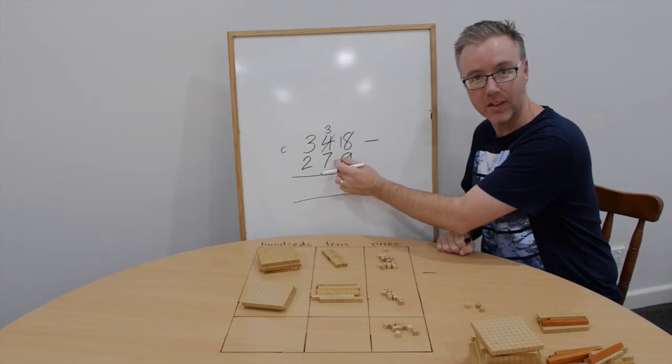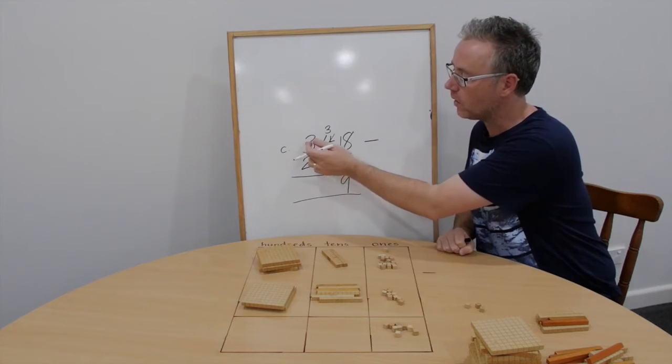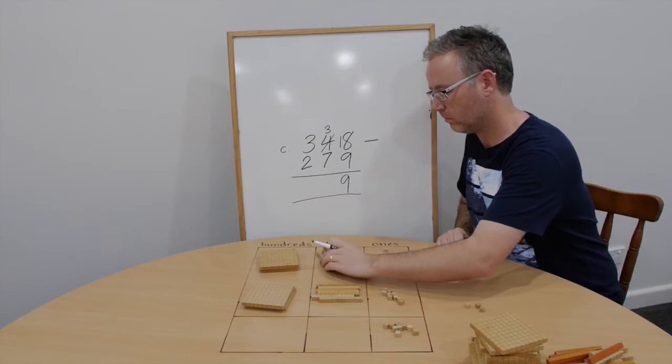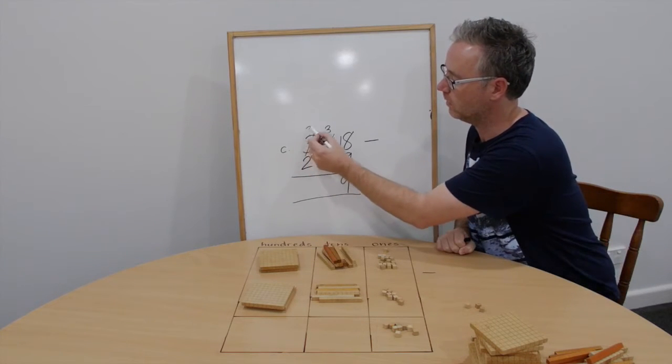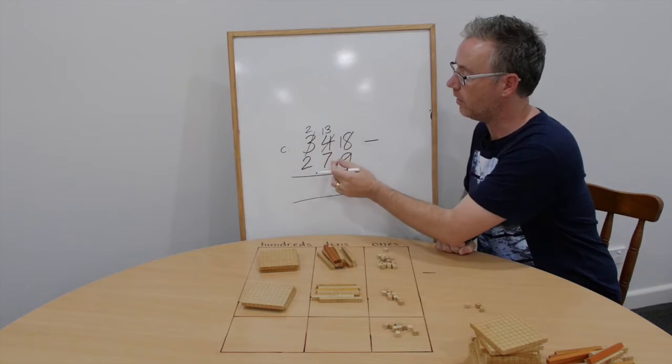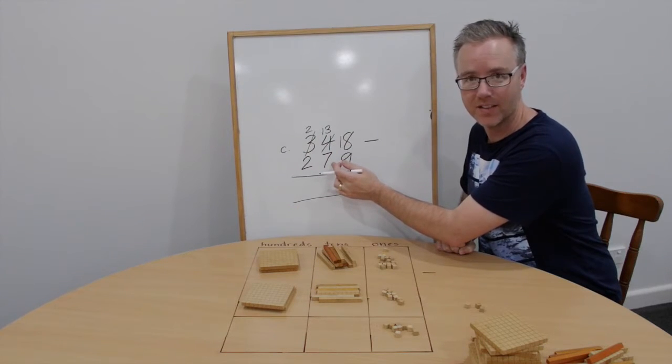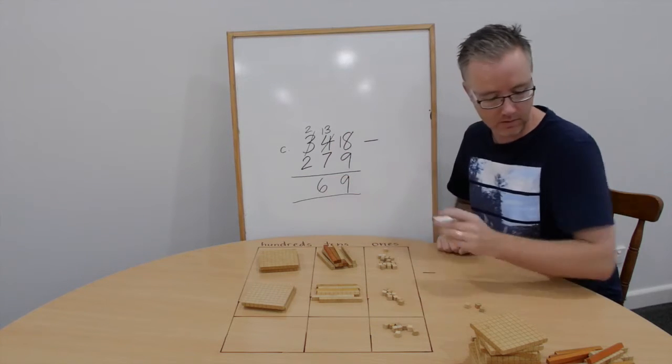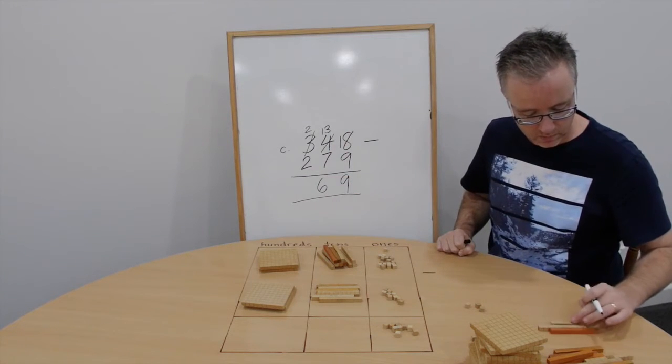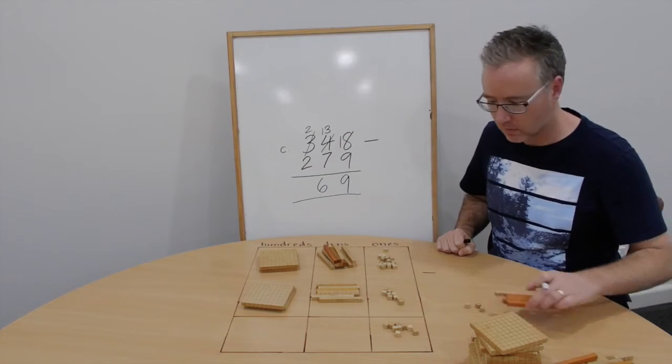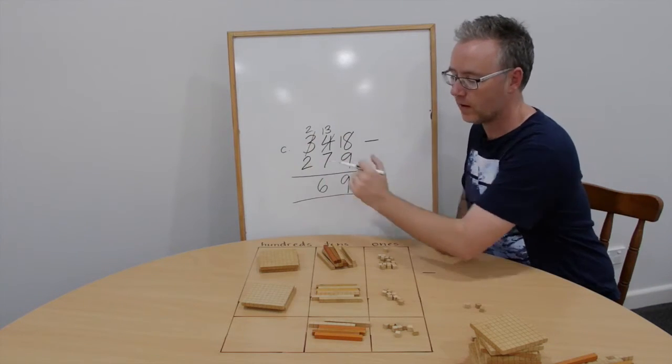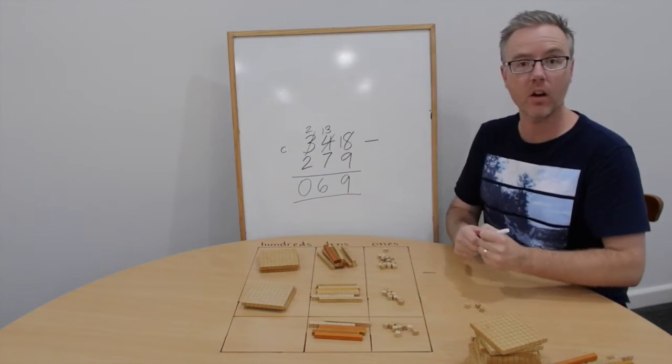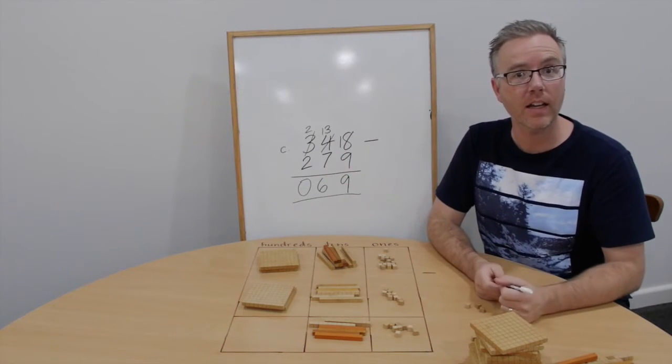3 take away 7 we can't do. So let's trade 1 of the hundreds for ten tens. We now have 13 tens take away 7 tens. 13 take away 7 is 6. And 2 take away 2 is 0. Answer, 69. Check that against your estimate.